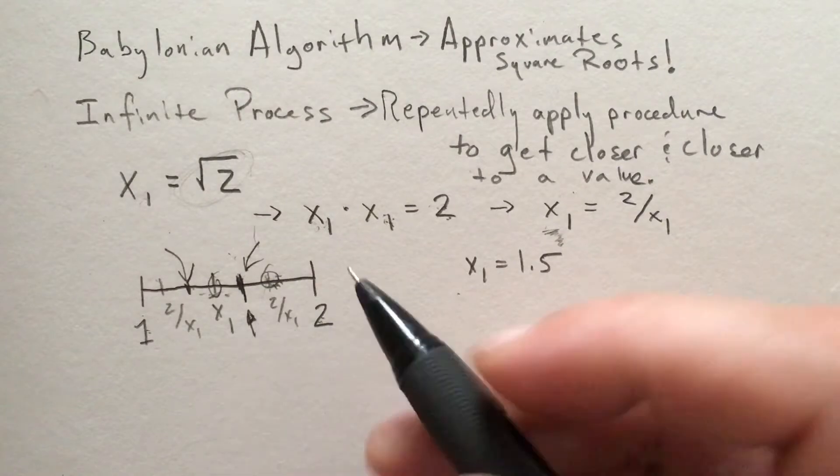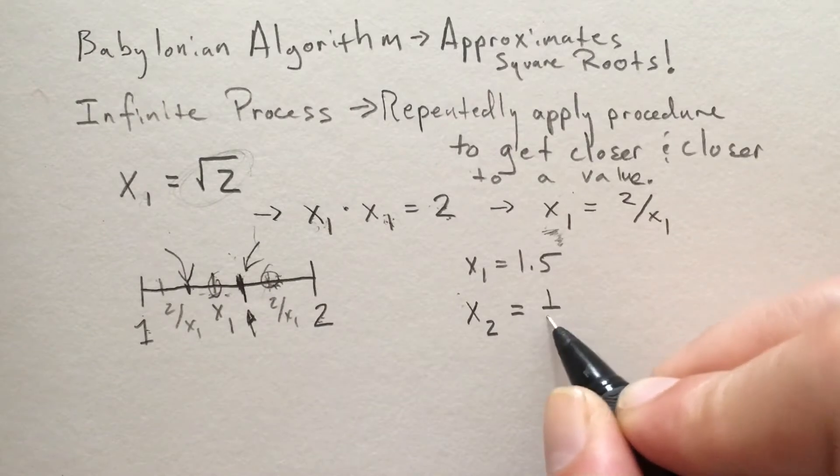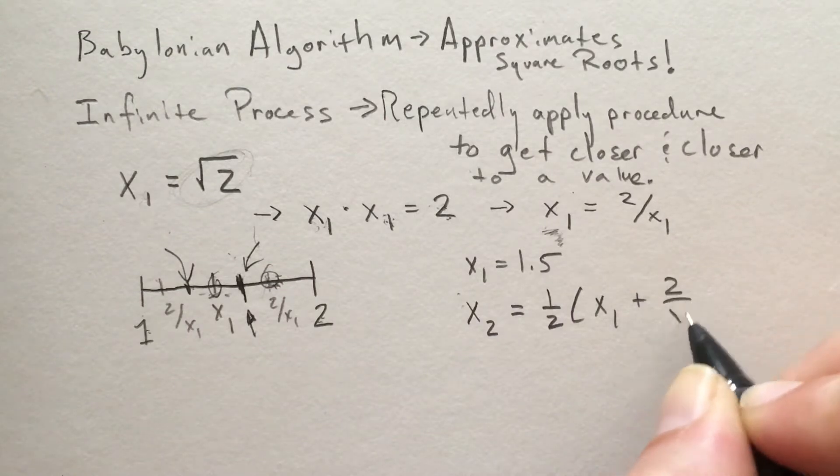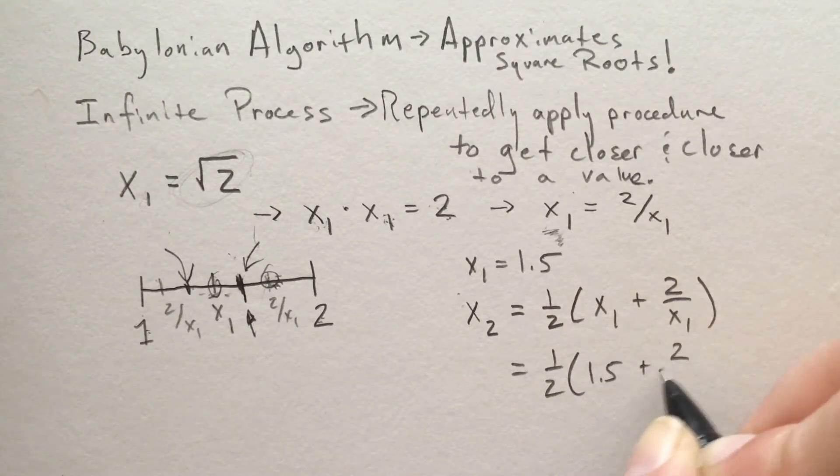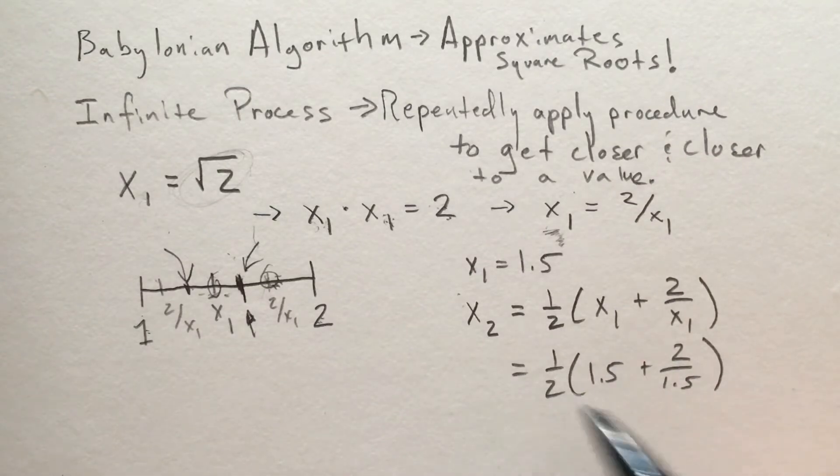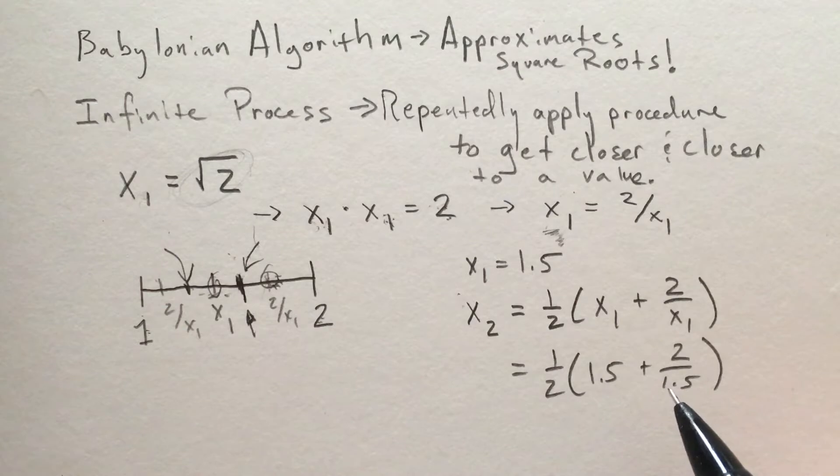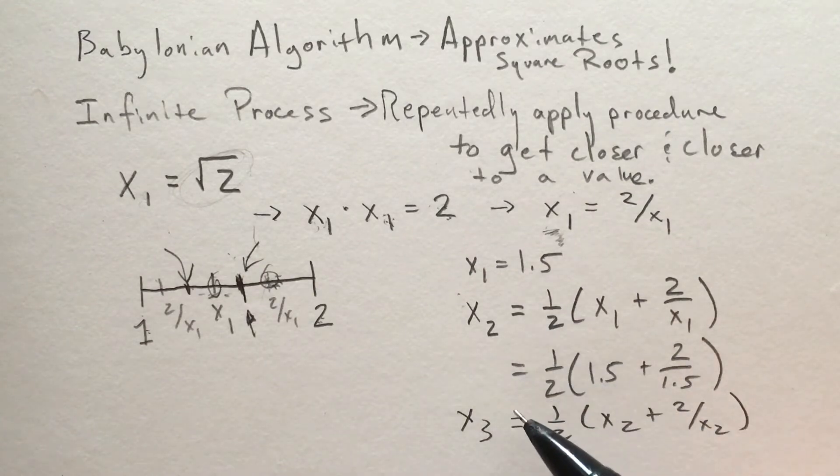That's what I'll call x₂, which is just the midpoint or average: one half times (x₁ plus 2 over x₁). In this case, we start with 1.5, so x₂ equals one half times (1.5 plus 2 over 1.5). This is still not the actual square root; however, we are much closer. Similarly, x₃ equals one half times (x₂ plus 2 over x₂) would be an even better approximation. Each time we repeat this, we get closer and closer to the value we're looking for.